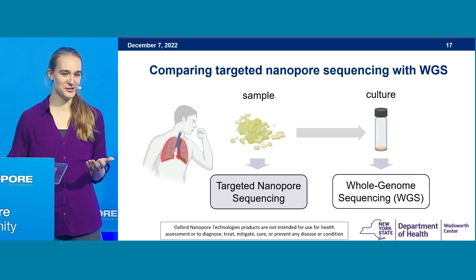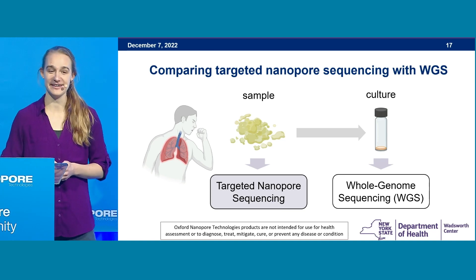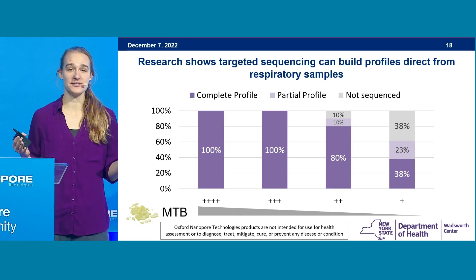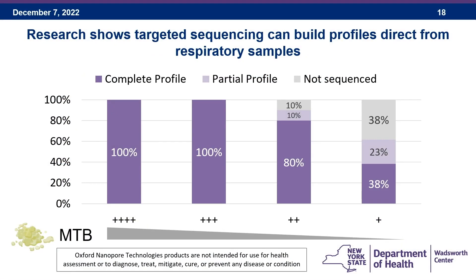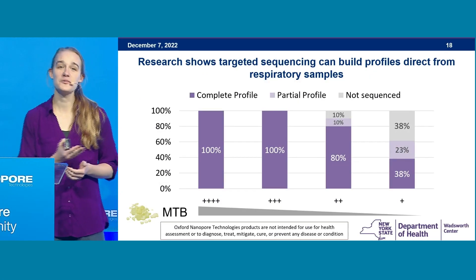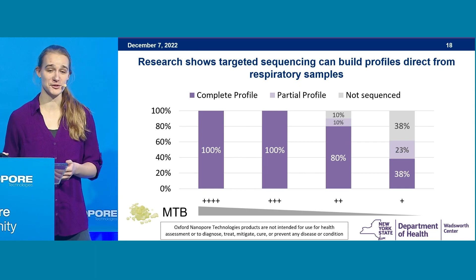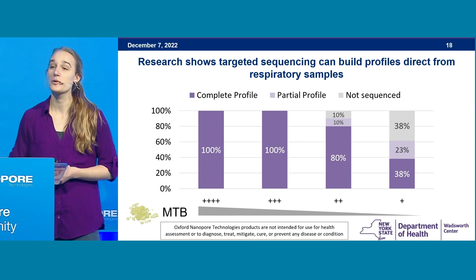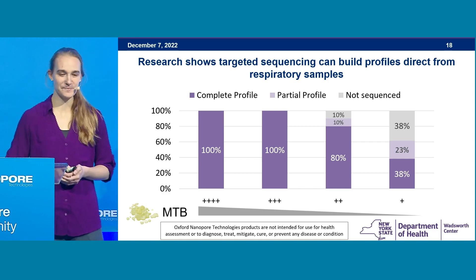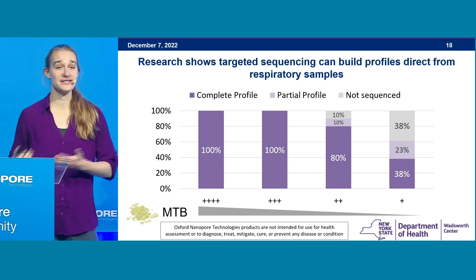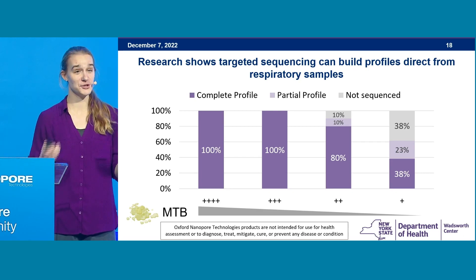Getting good quality sequence data from a respiratory sample can be challenging, so I want to show that we can get the data we need. Here I'm showing a chart with all samples divided by how much TB was in the initial sample, based on TB-like cells seen during microscopy — highest TB loads on the left, lowest on the right. In dark purple are complete profiles where we could determine susceptibilities to all nine antimicrobials, which we're achieving for our highest TB loads. Light purple sections represent partial profiles with determinations for seven or more drugs. Gray samples had very low TB loads with insufficient amplification for sequencing. Our data quality correlates with sample type, and we do get sufficient information from the majority of samples we process.